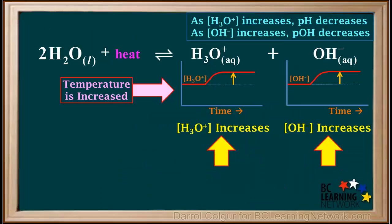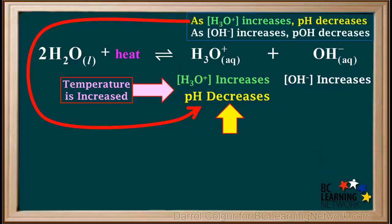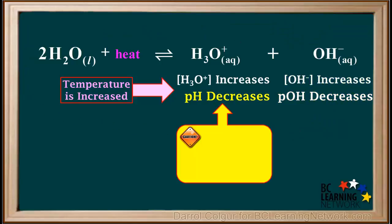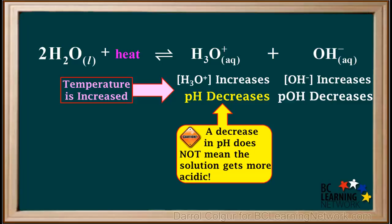So if we increase the temperature and both hydronium and hydroxide ion concentrations increase, as the concentration of hydronium increases, the pH decreases. And as the concentration of hydroxide increases, the pOH will also decrease. At this point, you must be really careful. You might mistakenly conclude that the decrease in pH means the solution gets more acidic. A decrease in pH does not mean the solution gets more acidic.